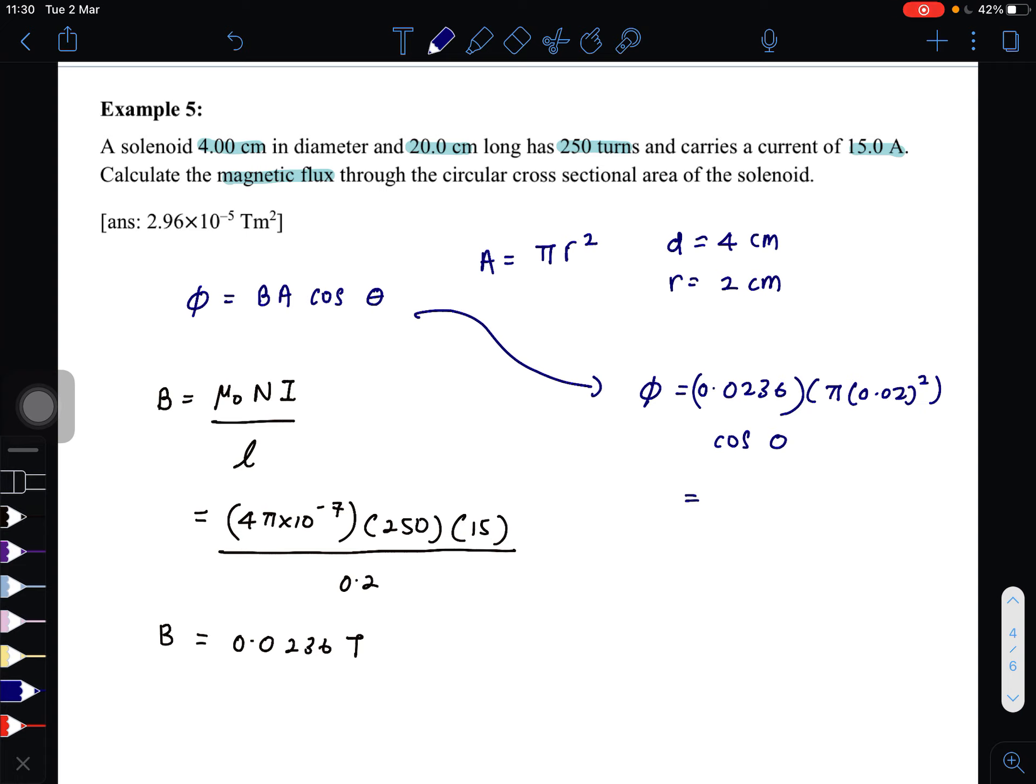Here, the area and the solenoid will make an angle of 0°, meaning they are parallel to each other. So we get 2.97 × 10⁻⁵ T·m², or you can also write weber. Okay, so that is all for Examples 4 and 5. Thank you.